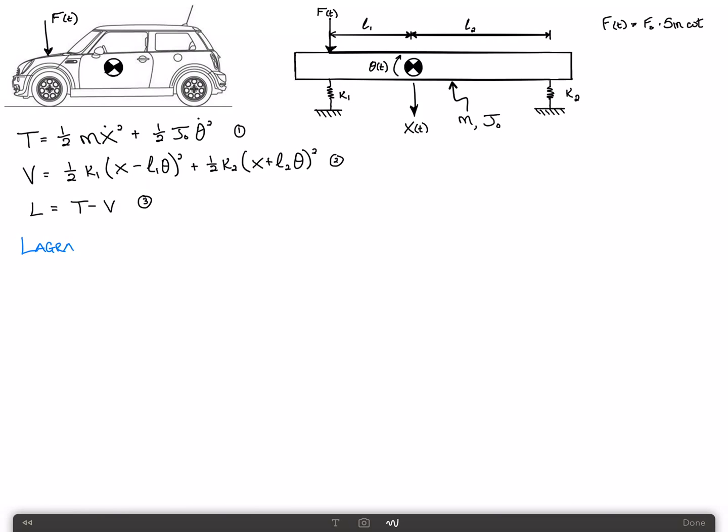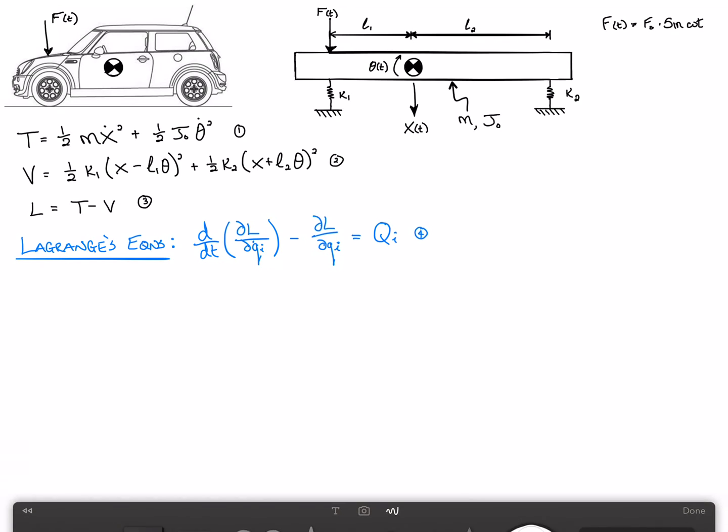And now we'll write out Lagrange's equations. I'll use a different color here just to keep it separate. Lagrange's equations. And that says that the time derivative of partial L partial Q dot sub I minus partial L partial Q sub I is equal to the generalized force, capital Q sub I. And we'll call this equation 4.